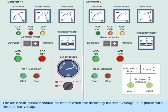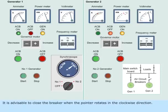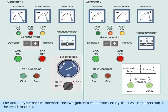The air circuit breaker should be closed when the incoming machine voltage is in phase with the bus bar voltage. It is advisable to close the breaker when the pointer rotates in clockwise direction. The actual synchronism between the two generators is indicated by the 12 o'clock position in the synchroscope.